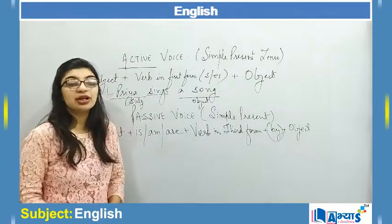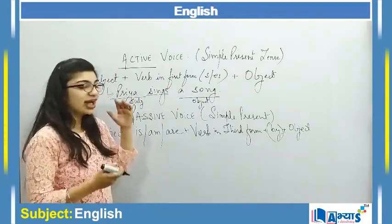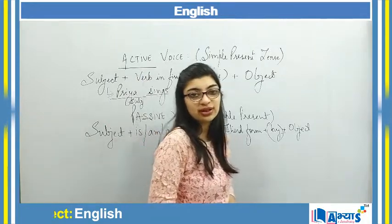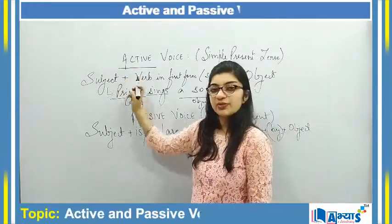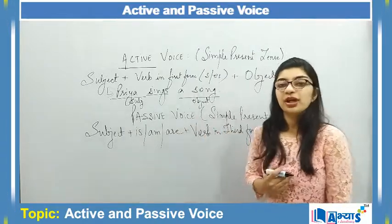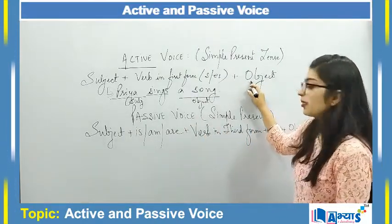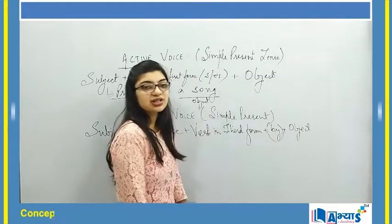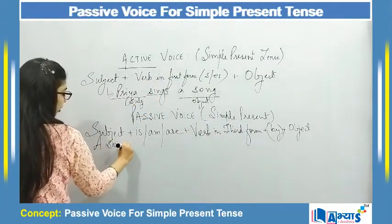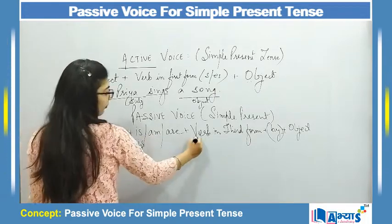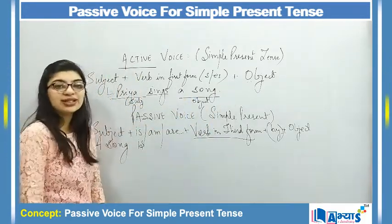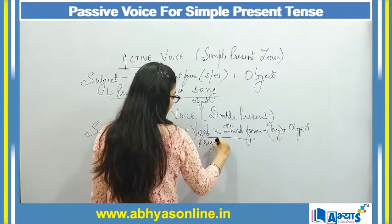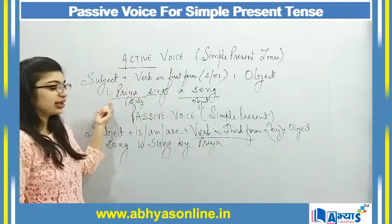Always remember that when we convert from active to passive — or passive to active — the subject and object interchange. So if Priya is the subject in active voice, she becomes the object in passive voice. The object 'a song' becomes the subject. So in passive voice we start with 'a song': 'A song is sung by Priya.'